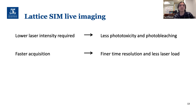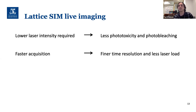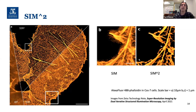To summarize the Lattice SIM benefits for live imaging: we don't need as much laser intensity as conventional SIM, resulting in less phototoxicity and photobleaching. We achieve faster acquisition by doing fewer phases. Together, these mean we can capture faster time-resolution events with less photodamage to the sample.